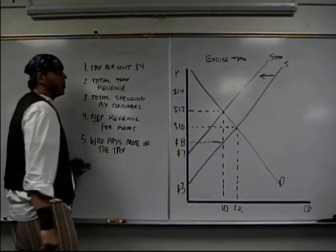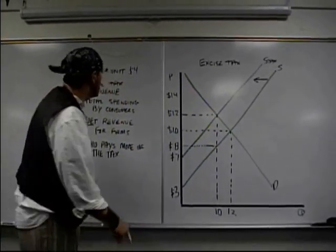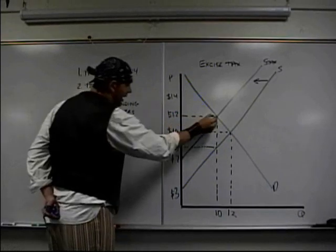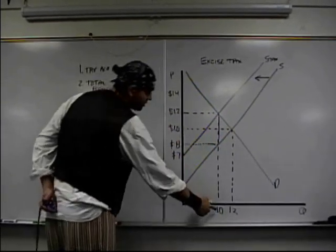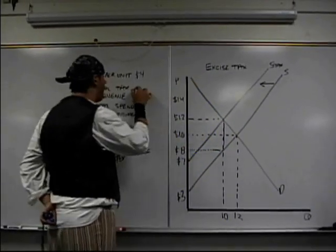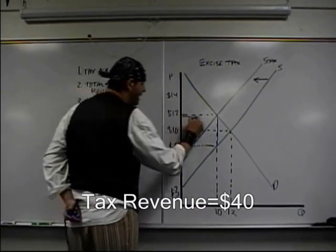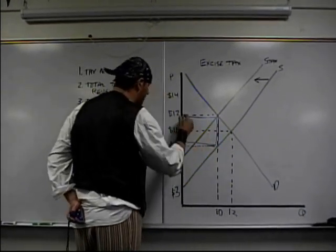The next question is how much is the total tax revenue that goes to the government? Well, it's a four dollar tax, which you can see again, it's right there. Four dollar tax. Four dollars times the new quantity, which is ten, is forty. That's how you ended up getting that. That box is sitting right in front of you, which is right there.